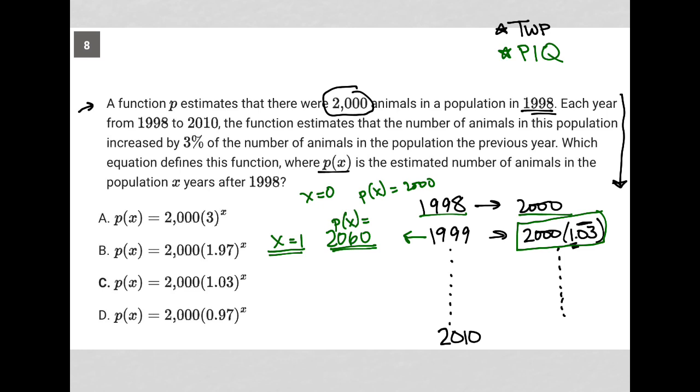For instance, with choice A, if X is equal to 1, that means I can replace that X right there with a 1. 3 to the first power is just 3, but 3 times 2,000 is 6,000. Well, we don't want 6,000. We want P of X to equal 2,060. So for that reason, A is gone.